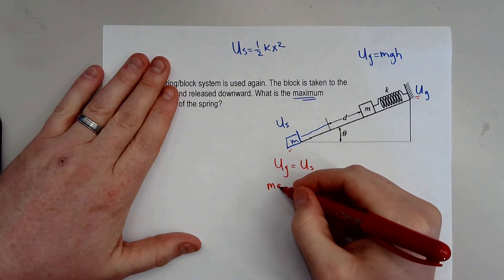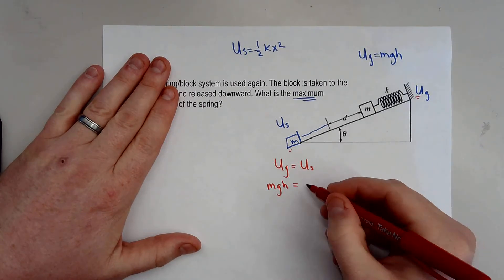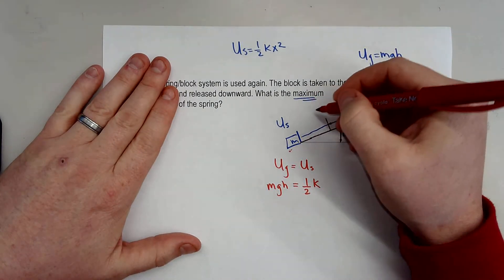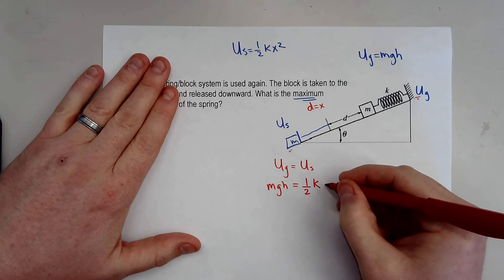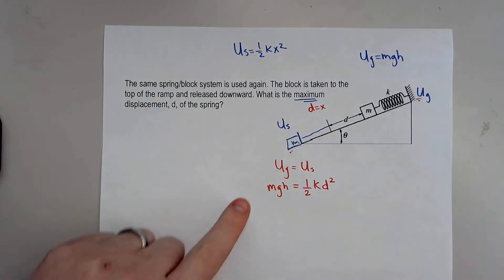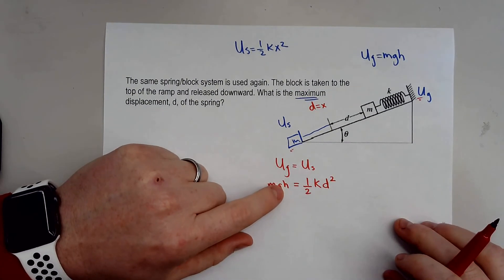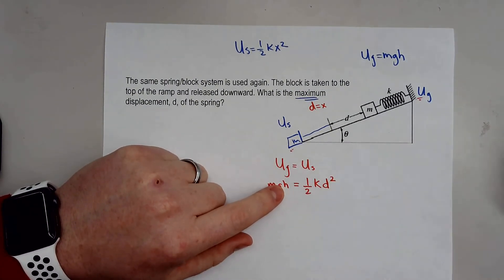So the potential energy is equal to the potential energy in the spring. So you get mass times gravity times height is equal to one half k. Now in this situation d will be equal to x and vice versa. So I'm going to solve for d and that is going to be d squared. Now right here this height component is something that we need to find out because we don't really know the height that it's falling.